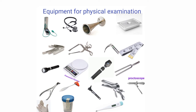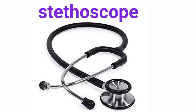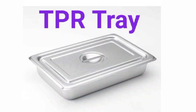Firstly, a sphygmomanometer is used to measure blood pressure. A stethoscope is used to listen to heart sounds. A fetoscope is used to listen to fetal heart sounds. TPR is used to examine the pulse rate, respiration rate, and temperature.